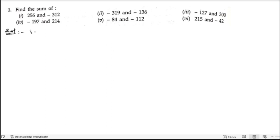In the first bit they have given 256 and minus 312. In place of 'and' we can put plus sign because it is sum, so minus 312. 256 plus into minus is minus 312.